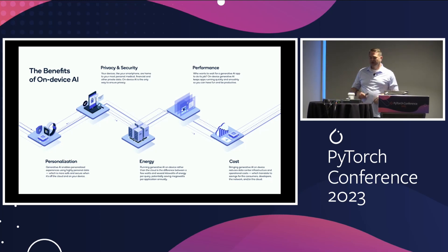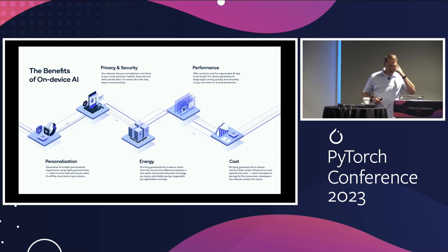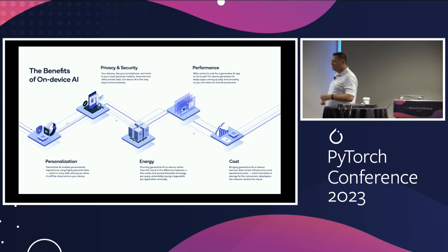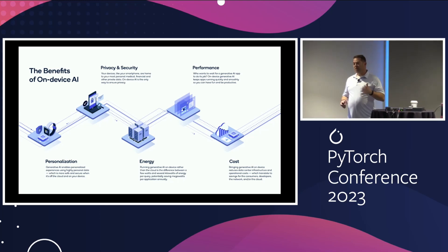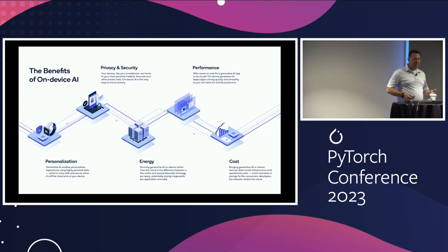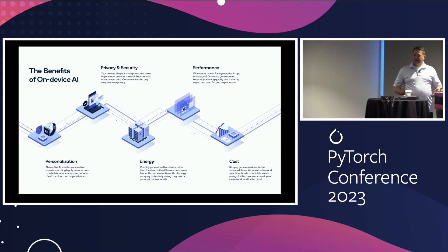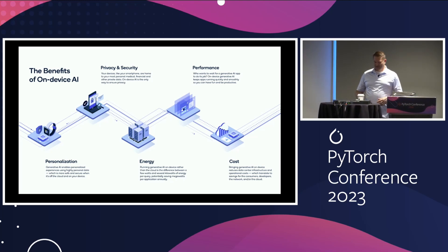Obviously personalization: if you have a device that knows who you are, what you do, and how you like things, personalization is something we can apply. Cost and energy go without saying — if you're processing images in the cloud, you're paying for those Amazon cloud servers. If you push that application to run on the device, it's the end user who pays for electricity to get that algorithm processed.